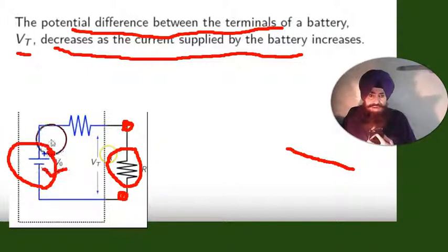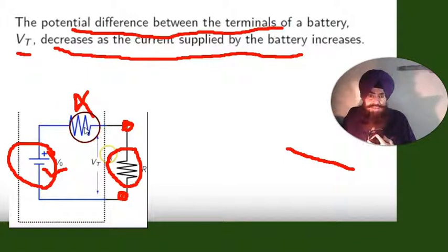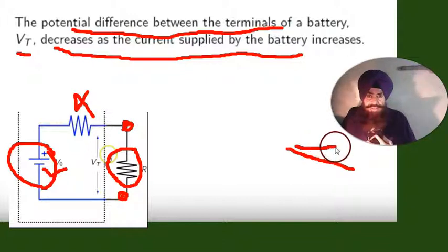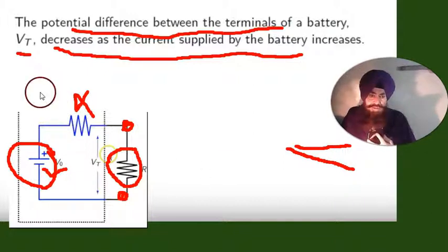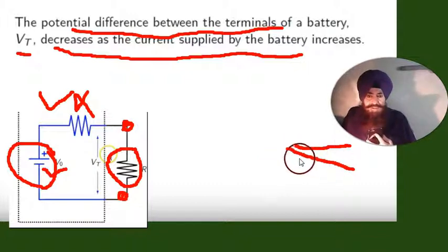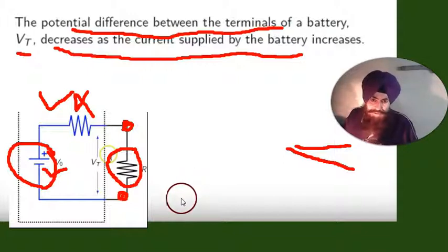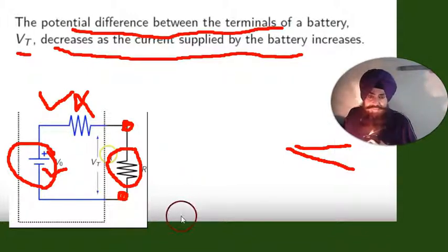If the voltage source is ideal — meaning it has no internal resistance — then there will be no change in the voltage. But if it is a real source, it will have internal resistance and the voltage will go down with increasing current.